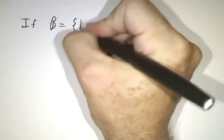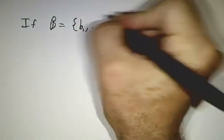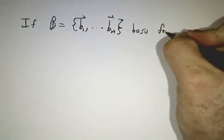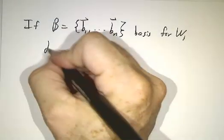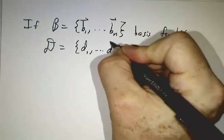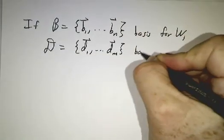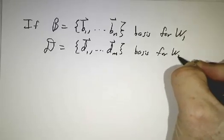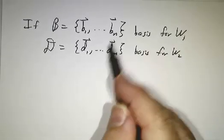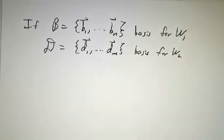Now, one thing about the external direct sum is that the dimensions add. So let's suppose that we have a basis for W₁, and let's have another basis, I'll call it D. D₁ through Dₘ is a basis for W₂. So these live in totally different spaces. These are vectors in W₁, these are vectors in W₂.